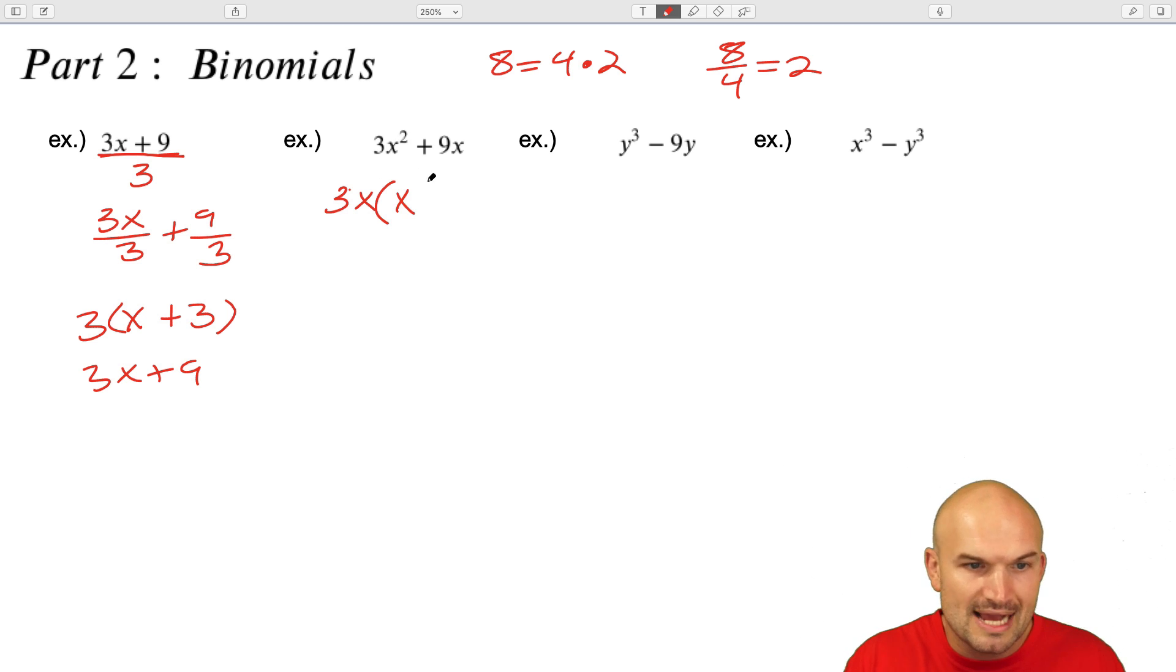Now, technically what I'm doing is I am dividing 3x by both of these terms. So sometimes you might just want to think 3x times what gives me 3x squared? Well, that's going to be x. 3x times what gives me 9x? That's going to be a positive three. So instead of sometimes doing division, which you could do, you could do the exact same process that I did in the last one.